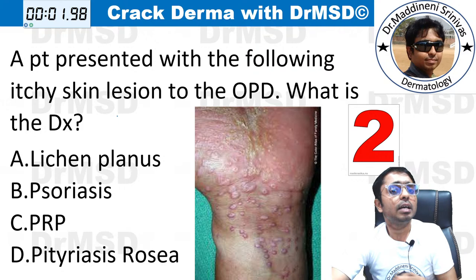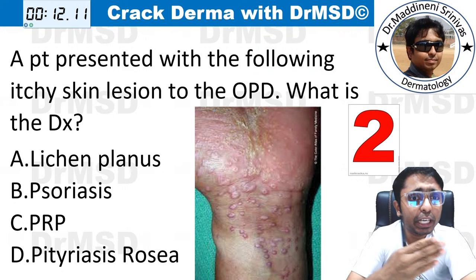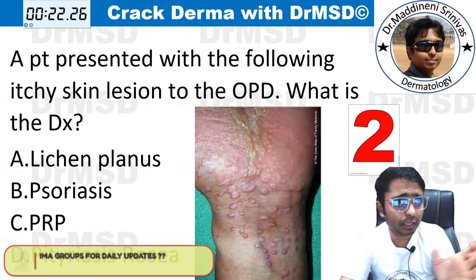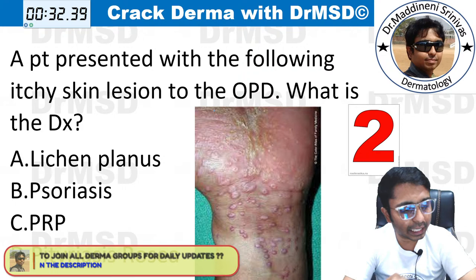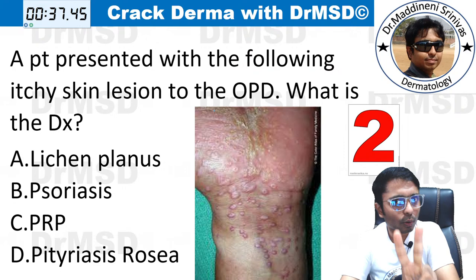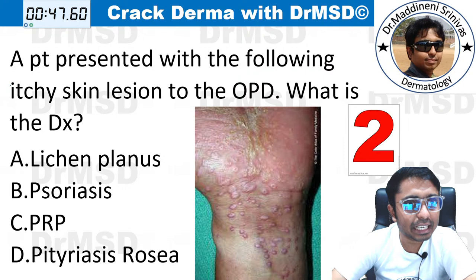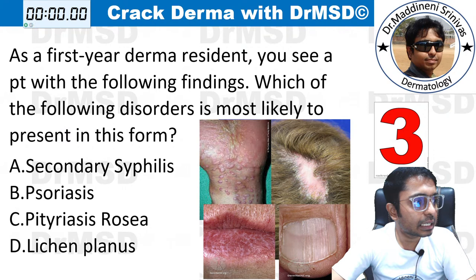Question number two. A patient presented with the following itchy lesion to the outpatient department. What is the diagnosis? Options are lichen planus, psoriasis, PRP (pityriasis rubra pilaris is the full form), and pityriasis rosea. Out of the given options, what do you think is the answer? I am getting option A. Lichen planus is the right answer. Very good.